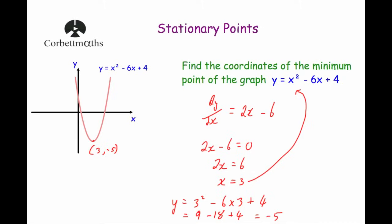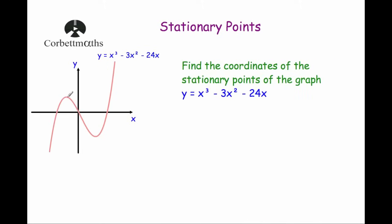This time we've got a cubic with two turning points — a maximum turning point and a minimum turning point. We've been asked to find the coordinates of both the stationary points of y equals x cubed minus 3x squared minus 24x. We're going to differentiate: dy/dx — bring the three down, so 3x squared, reduce the power by 1, then bring the two down giving 6x, and differentiating minus 24x gives minus 24.